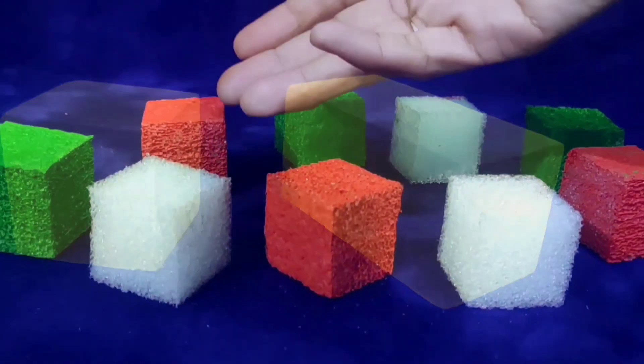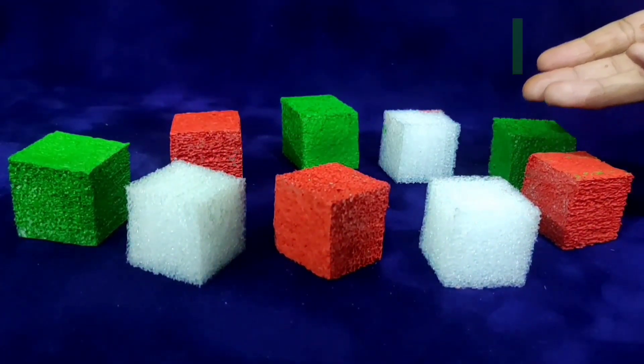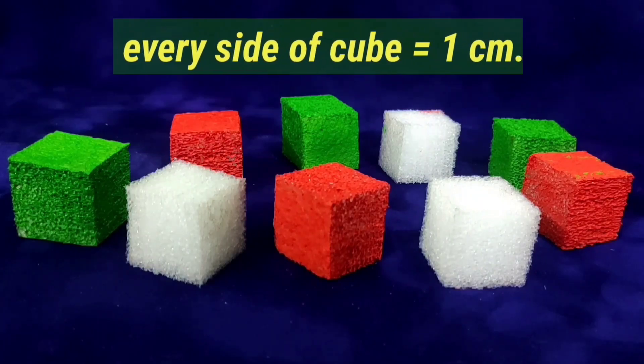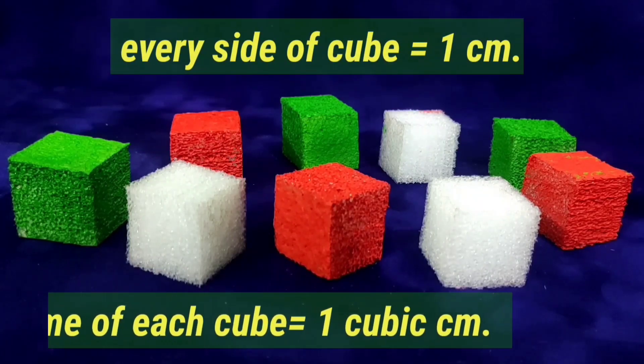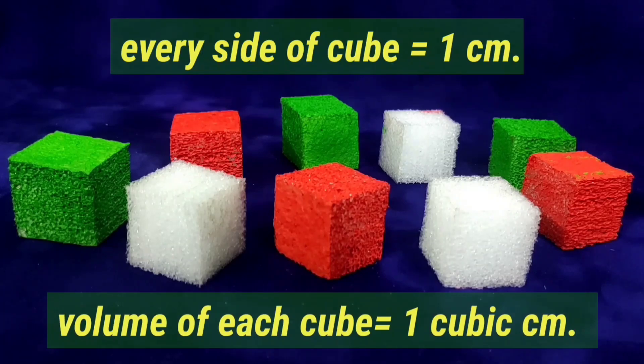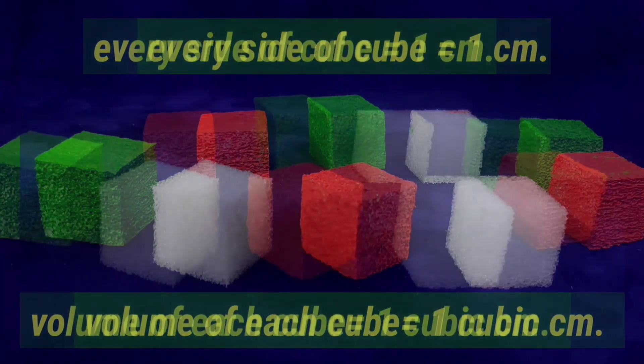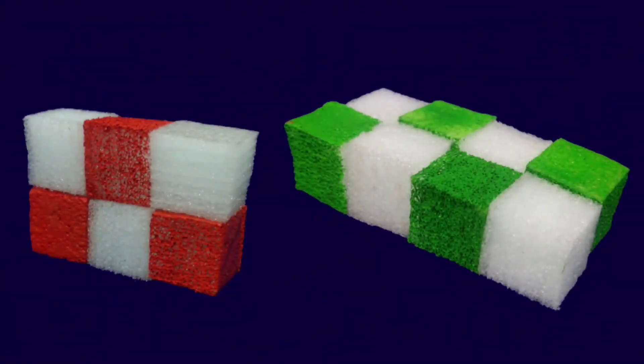Here we have some cubes, all of the same size. Every side of cube is 1 cm, and the volume of each cube is 1 cm³. By joining these unit cubes, we have formed two cuboids.